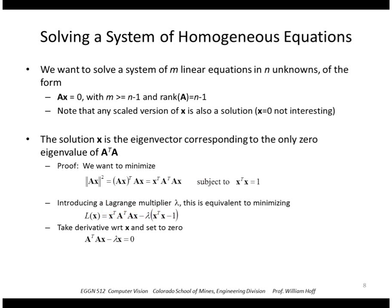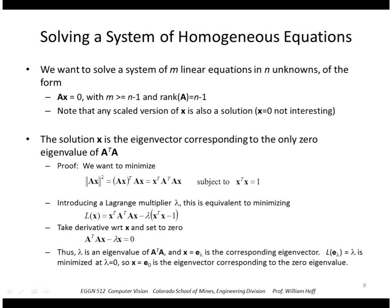And what we get is A transpose A times x equals lambda x. So this is exactly our eigenvalue-eigenvector system again. So lambda is the eigenvalue of A transpose A, and x is an eigenvector. So what is lambda? Well, we also want to minimize the Lagrangian, this quantity, and we can do that when lambda equals 0. So that means that x, the eigenvector corresponding to the zero eigenvalue, is the eigenvector that we want.